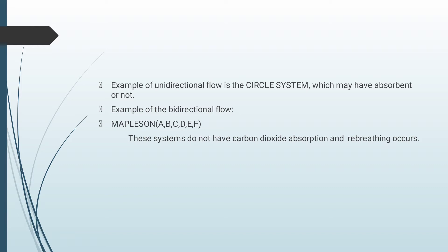An example of unidirectional flow is the circle system, which may have an absorbent or not. An example of bidirectional flow is Mapleson systems. These systems do not have carbon dioxide absorption and re-breathing occurs depending on fresh gas flow. Since there is no device for absorbing carbon dioxide, the fresh gas flow must wash out the carbon dioxide from the circuit. These systems are sometimes called carbon dioxide washout circuits or flow-controlled breathing systems because elimination of carbon dioxide depends on fresh gas flow. It is best to monitor end-tidal carbon dioxide to determine the optimal fresh gas flow.